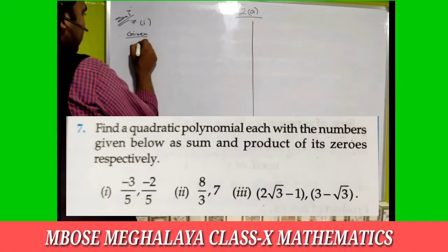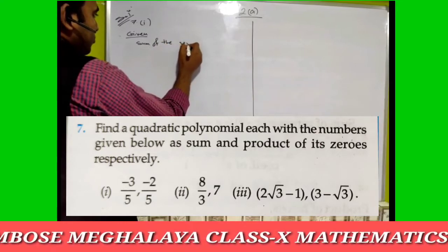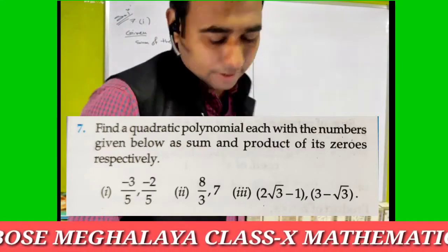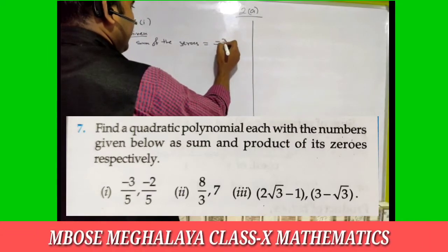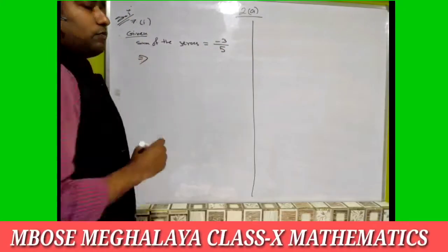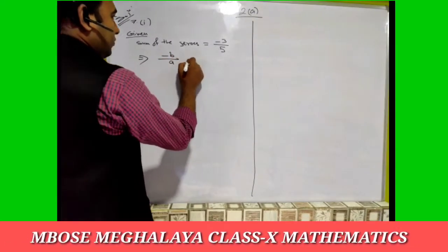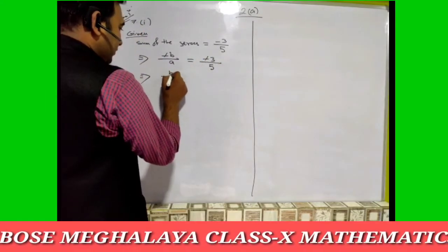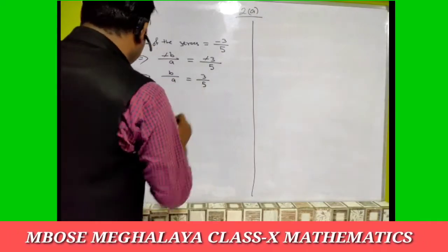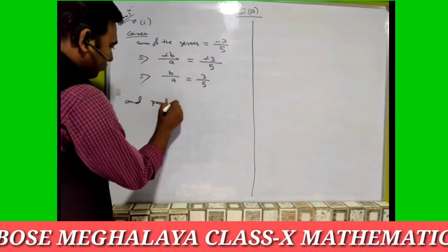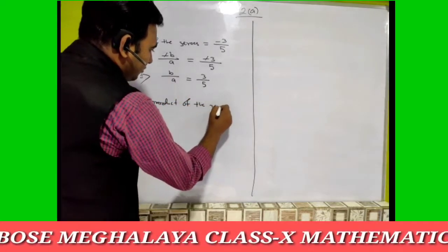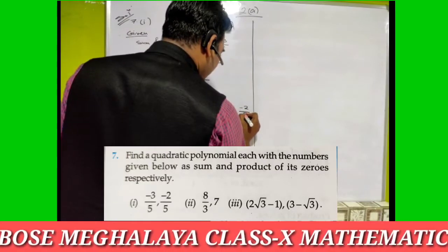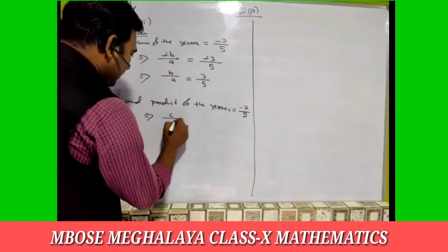Given: sum of the zeros is minus three by five. We know that the formula for sum of the zeros is minus b by a. So here, minus b by a equals minus three by five — both sides minus will cancel, giving us b by a equal to three by five. The product of the zeros is minus two by five. The formula for product is c by a, so c by a equals minus two by five.